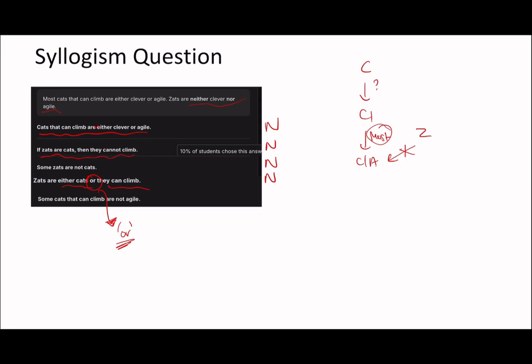Some cats that can climb are not agile. It says most cats are either clever or agile, which must mean that few cats are neither clever nor agile. So this is right to conclude, because 'few' just means a specified amount less than 50. I would say that this is going to be true — some cats that climb are not agile. You can see a couple of tricky questions in there, but I think it is very much doable from this kind of standpoint.